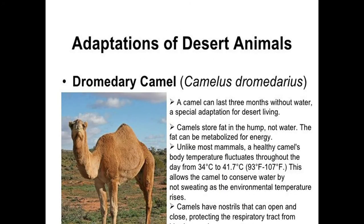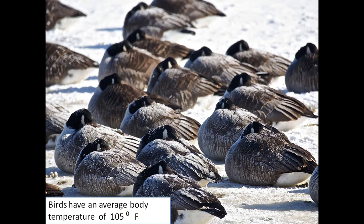What are the adaptations shown by a camel to live in deserts? A camel can last three months without water. Camels store fat in the hump, not water; the fat can be metabolized for energy. A healthy camel's body temperature fluctuates throughout the day from 34°C to 41.7°C, allowing it to conserve water by not sweating as environmental temperature rises. Camels also have nostrils that can open and close, protecting the respiratory tract from sand.